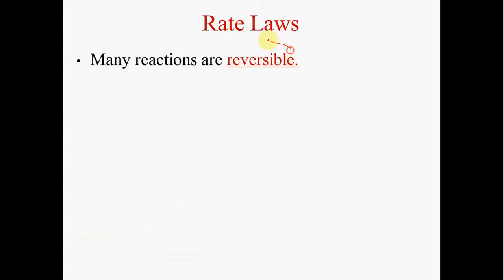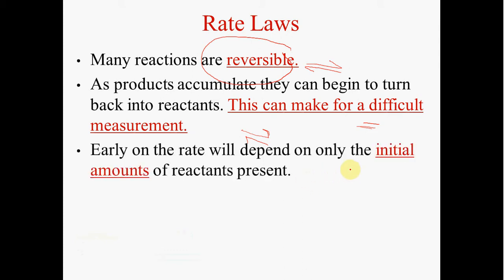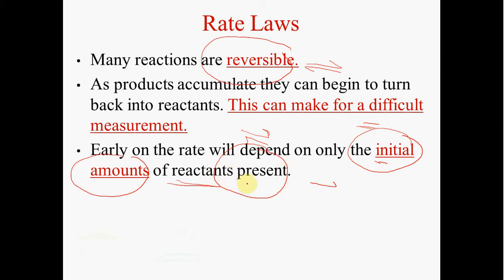Many of the reactions that we do in chemistry are reversible — they go forward and then reverse and return. We're not going to deal with complicated rate laws that involve these reversible reactions. Early on in a reaction, the rate will depend only on the initial amounts of reactants, and that's why it's called the initial rate method — it uses initial concentrations where typically only reactants are present, making the solving much simpler.